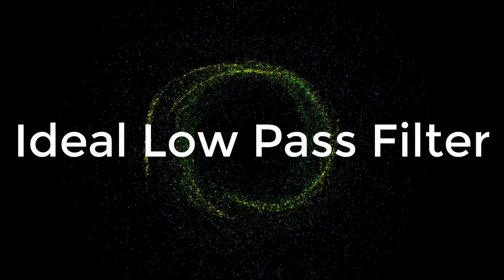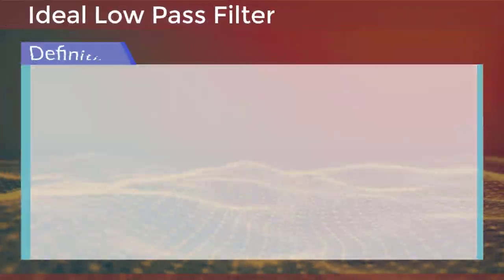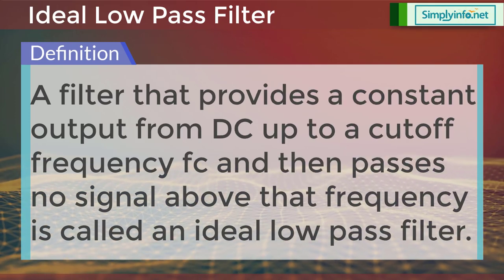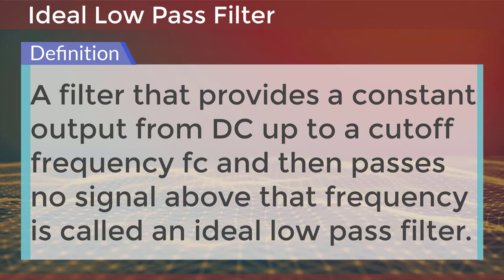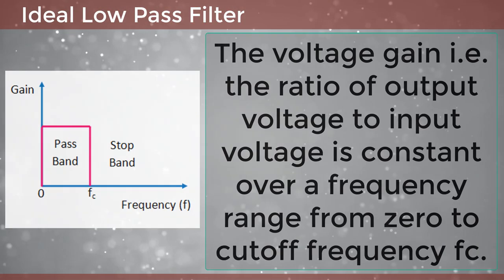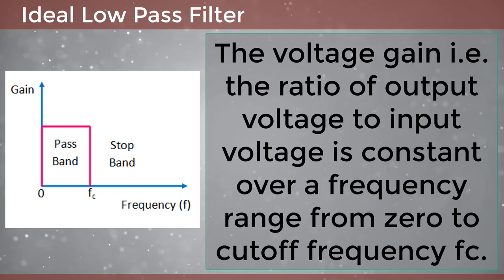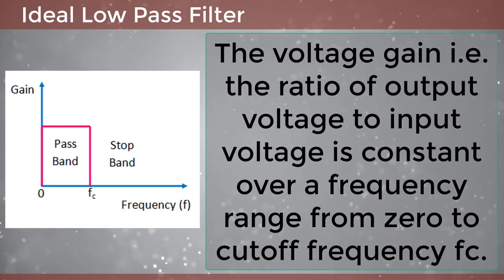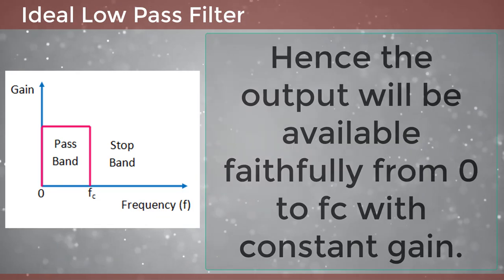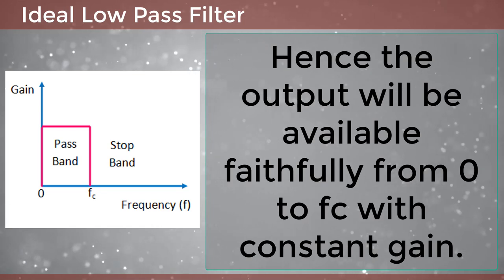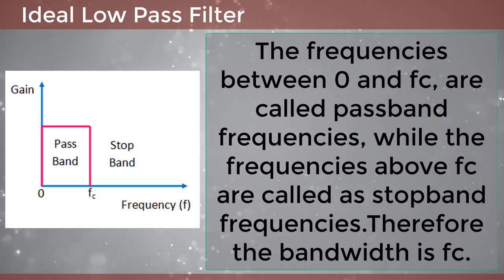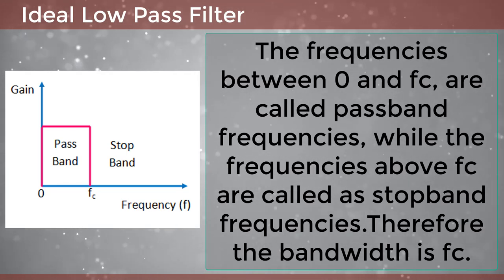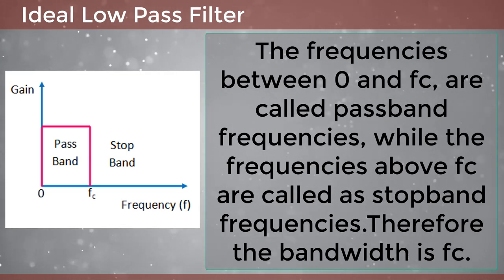What is an ideal low pass filter? A filter that provides a constant output from DC up to a cutoff frequency FC and then passes no signal above that frequency is called an ideal low pass filter. The voltage gain, i.e. the ratio of output voltage to input voltage, is constant over a frequency range from 0 to cutoff frequency FC. Hence the output will be available faithfully from 0 to FC with constant gain. The frequencies between 0 and FC are called pass band frequencies, while the frequencies above FC are called stop band frequencies. Therefore, the bandwidth is FC.